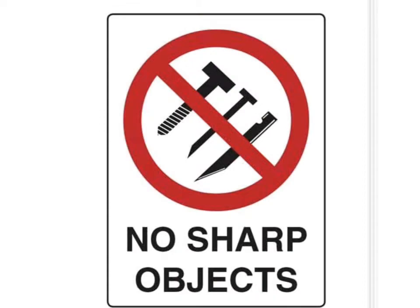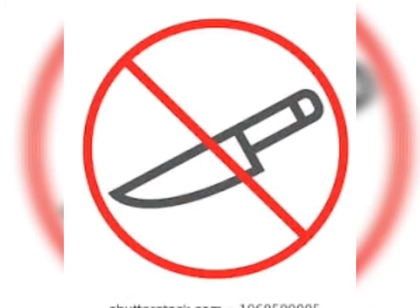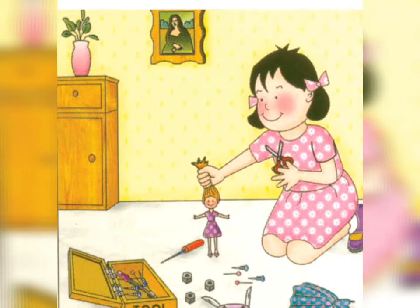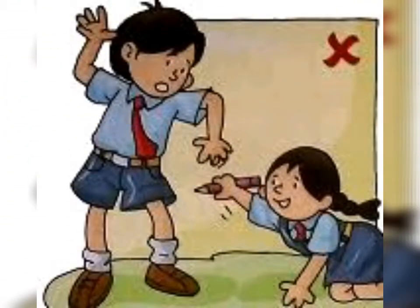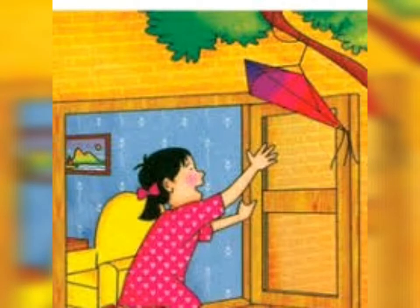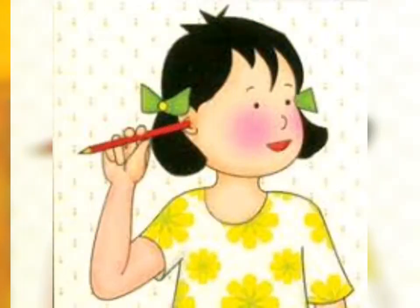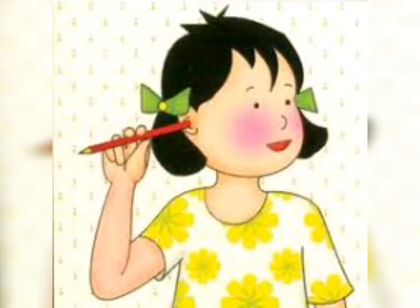You all are very grown up. You handle scissors, knives, blades, paper cutters and you think that nothing will happen to you, that you will not cut your hand. But children, sharp objects are after all sharp objects. They are not toys. They are not any plaything. So be very careful while using scissors and knives. If you are using such things, either be very careful or use them in front of an adult.